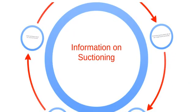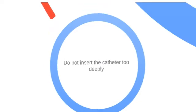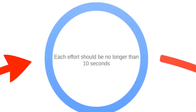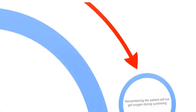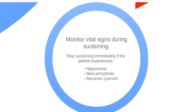Here are some tips on suctioning. Do not insert the catheter too deeply. Sterile technique should be used near bronchi. Each effort should be no longer than 10 seconds. Keep in mind that the patient will not get oxygen during suctioning. Monitor vital signs and stop if the patient experiences hypoxemia, new arrhythmia, or becomes cyanotic.